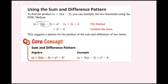Using the sum and difference pattern: to find the product of x plus 2 times x minus 2, using FOIL gives x squared minus 2x plus 2x minus 4. The negative 2x and positive 2x cancel, leaving x squared minus 4. This suggests a pattern: the quantity a plus b times the quantity a minus b equals a squared minus b squared, since the middle terms always cancel.